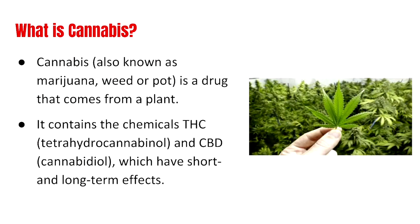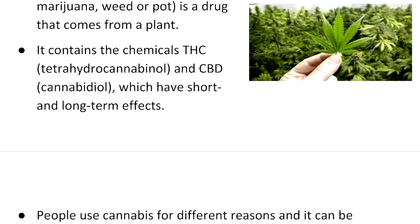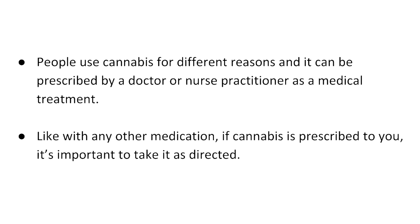So what is cannabis? Cannabis, also known as marijuana, weed, pot, is a drug that comes from a plant. It contains a chemical THC which represents tetrahydrocannabinol, and CBD which is cannabidiol, and they have some short-term and long-term effects that we are going to look at. People use cannabis for different reasons and it can be prescribed by a doctor or nurse practitioner as medical treatment. Like other medications, if cannabis is prescribed to you, it's important to take it the way it is directed.